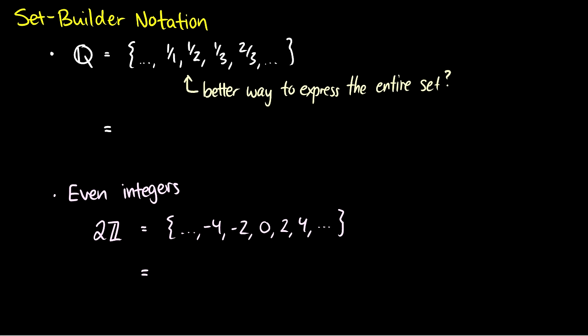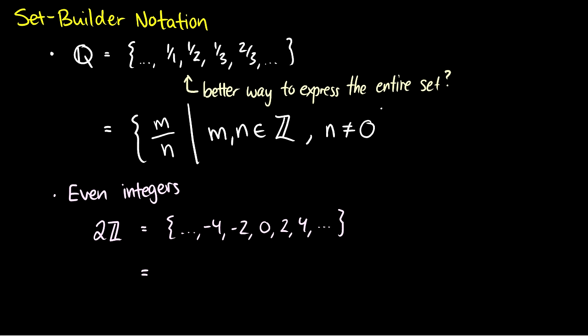The next thing we should talk about is set builder notation. Before I introduced the rational numbers I said it's one over one, one over two, one over three, two over three, and so on. There's a better way to represent this entire set. This is set builder notation, or predicate notation, where we define elements as variables. For instance, I can say this is the set containing elements of the form m over n, such that — this straight bar means 'such that' — m and n have to be integers, and n cannot be zero so we're not dividing by zero.